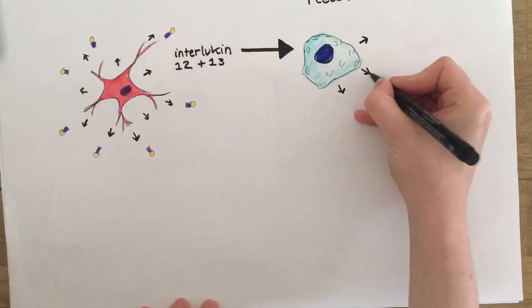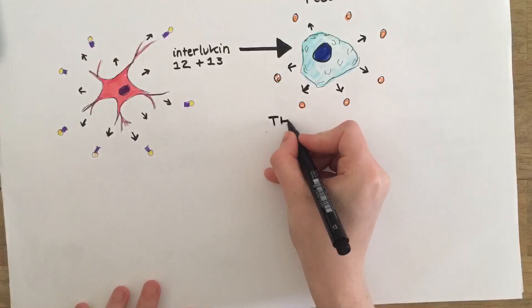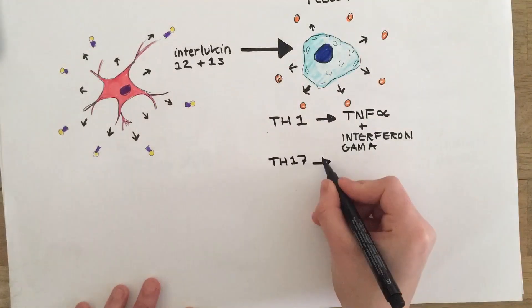Interleukin 23 acts on TH17 cells, which causes them to release interleukin 17 and other pro-inflammatory cytokines.